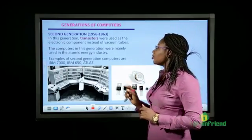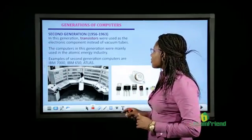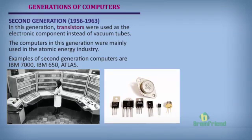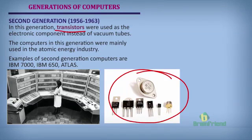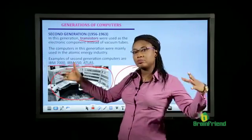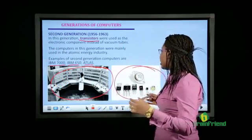In the second generation, transistors were used as electronic components instead of vacuum tubes. These computers were mainly used in atomic industries. Examples include the IBM 7000, IBM 650, and ATLAS. They were also large computers.